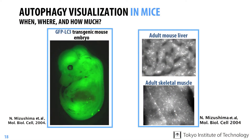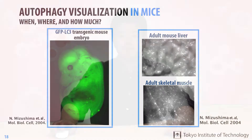Moreover, transgenic mice expressing GFP-LC3 were generated in the lab, which allowed us to know when, where, and how much autophagy is activated in a whole mouse body.